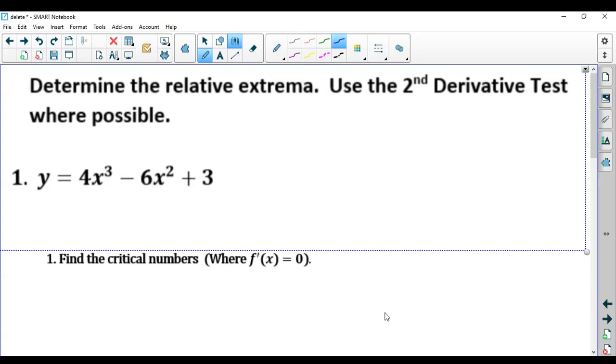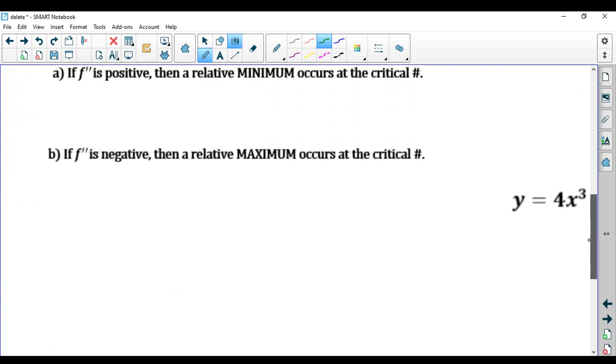Here is a simple example of using the second derivative test to find relative extrema. The function we're starting with is this polynomial function. To find the relative extrema using the second derivative test, I'm just going to go over the exact same steps from my last video.